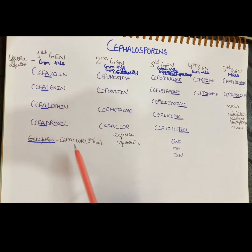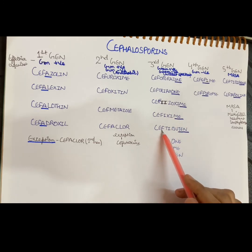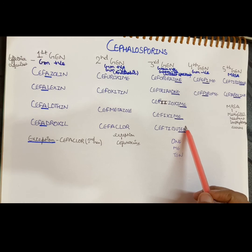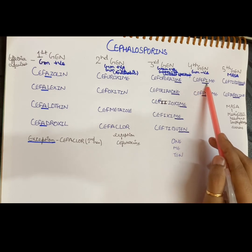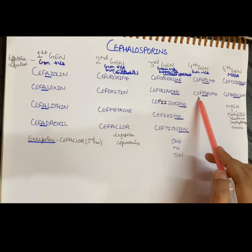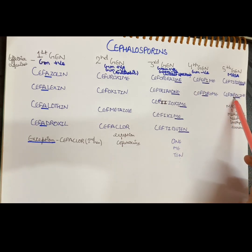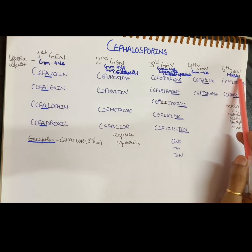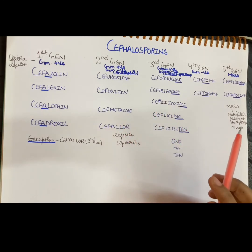To quickly summarize: whenever 'A' comes after Ceph, it belongs to the first generation — exception is Cefaclor. For the third generation, we get 'one', 'me', or 'ten' after Ceph. Fourth generation has 'PI' after Ceph. Fifth generation has 'ROL' after Ceph. Everything remaining belongs to the second generation.